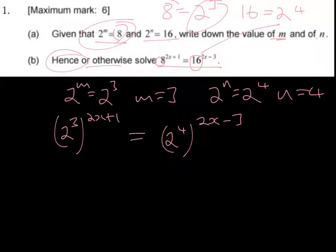We can now use the laws of indices to multiply out. So we can express the left hand side as 2 to the power 3 multiplied by brackets 2x plus 1, so that will give us 2 to the power 6x plus 3 on this side.